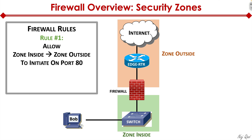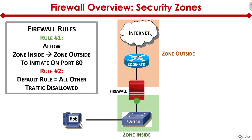We use these zones through firewall rules. Rule one could say: allow zone inside to initiate traffic on port 80 to zone outside. The default rule on a firewall is to deny all traffic — so rule two says all other traffic is disallowed, meaning we only allow zone inside to talk to zone outside if the traffic is initiated internally from the LAN going to the WAN over port 80. This is considered legitimate traffic because it's initiated from the inside. If somebody on the internet tries to initiate a TCP connection over port 80 into our LAN, the firewall will kill that traffic because we don't have that rule defined.